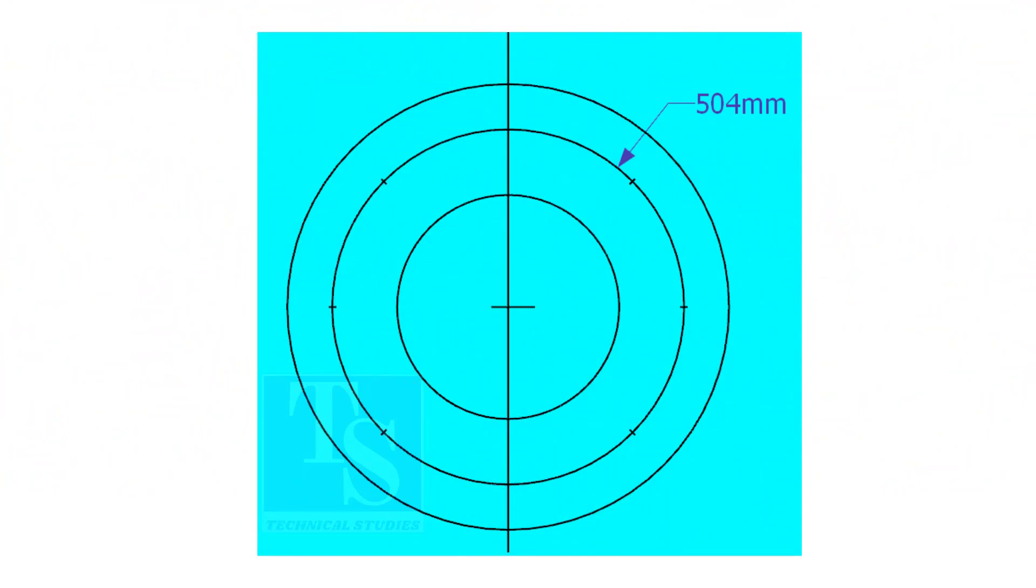To divide the circle easily and accurately, let us find the chord length of the holes.